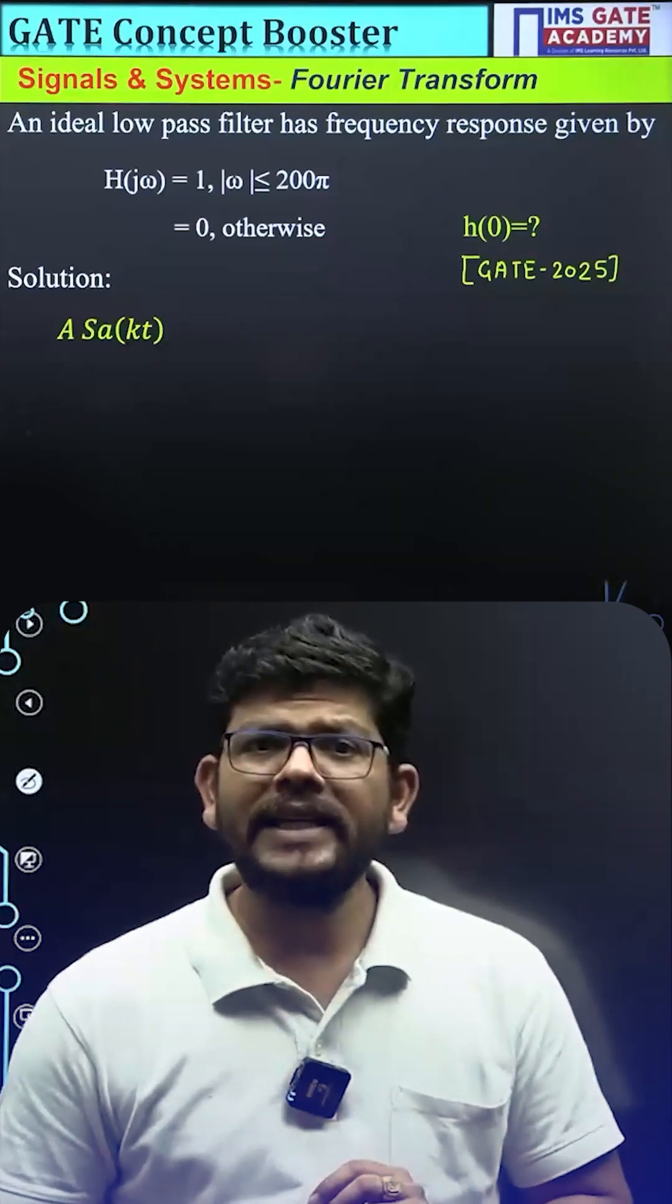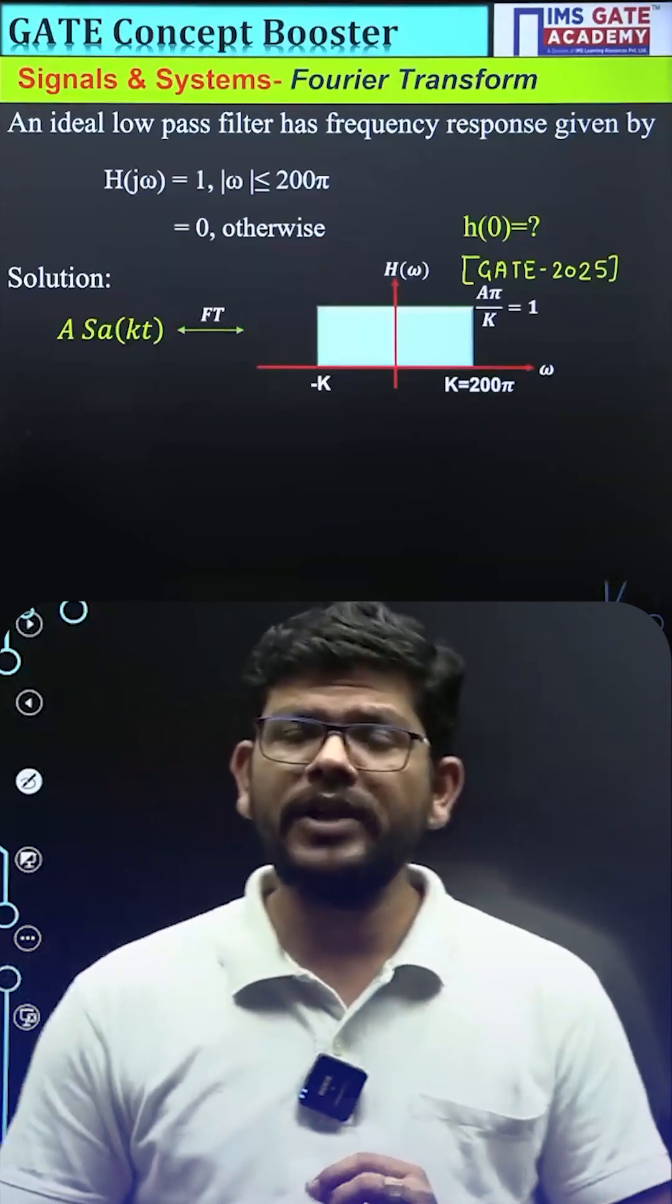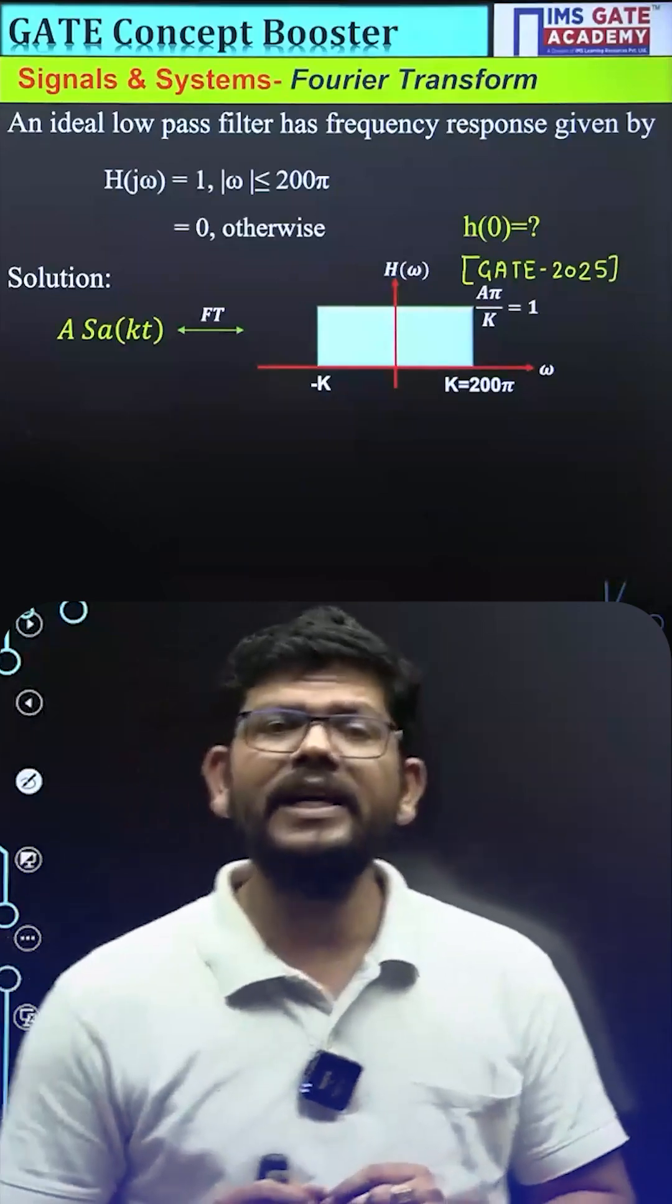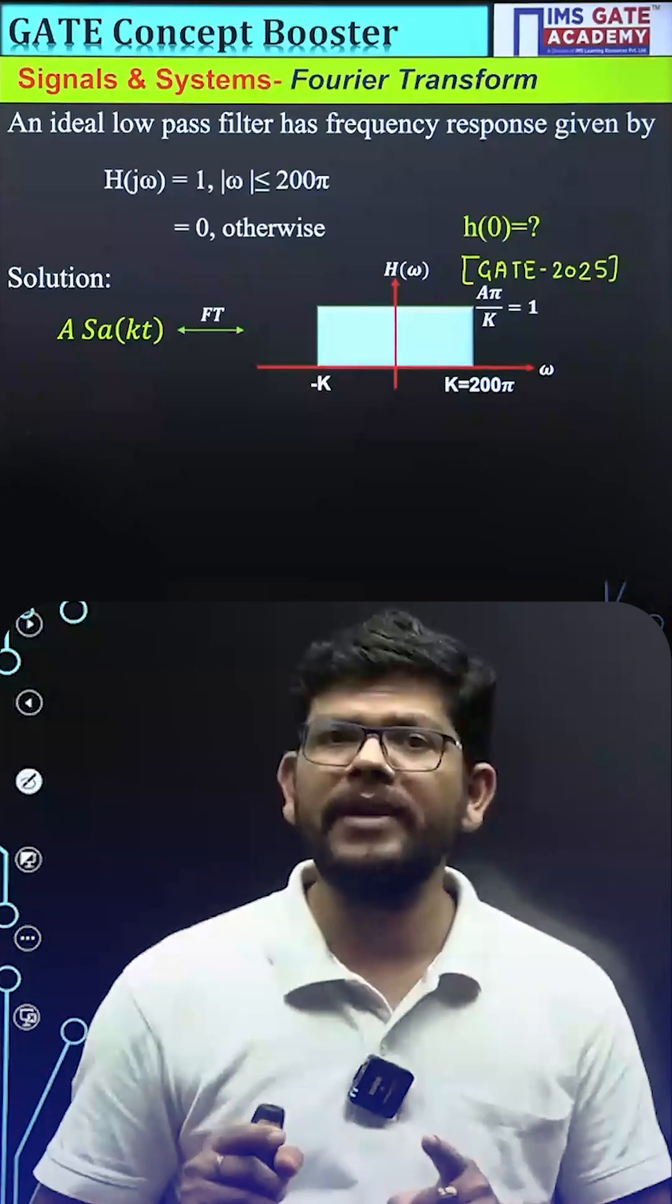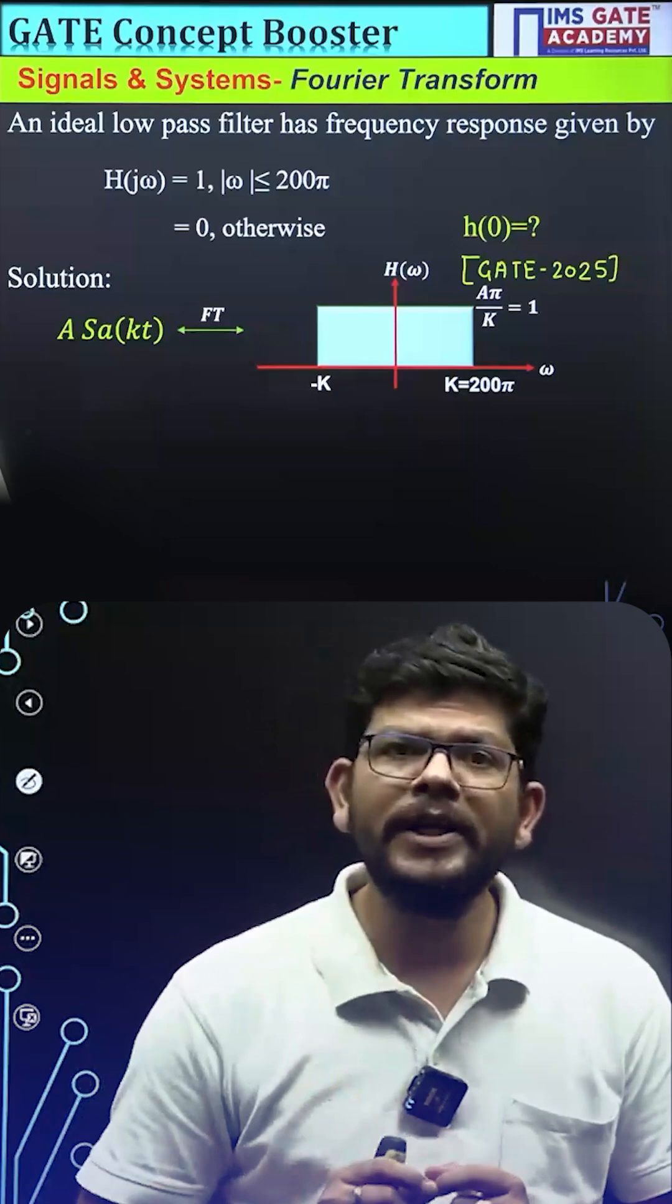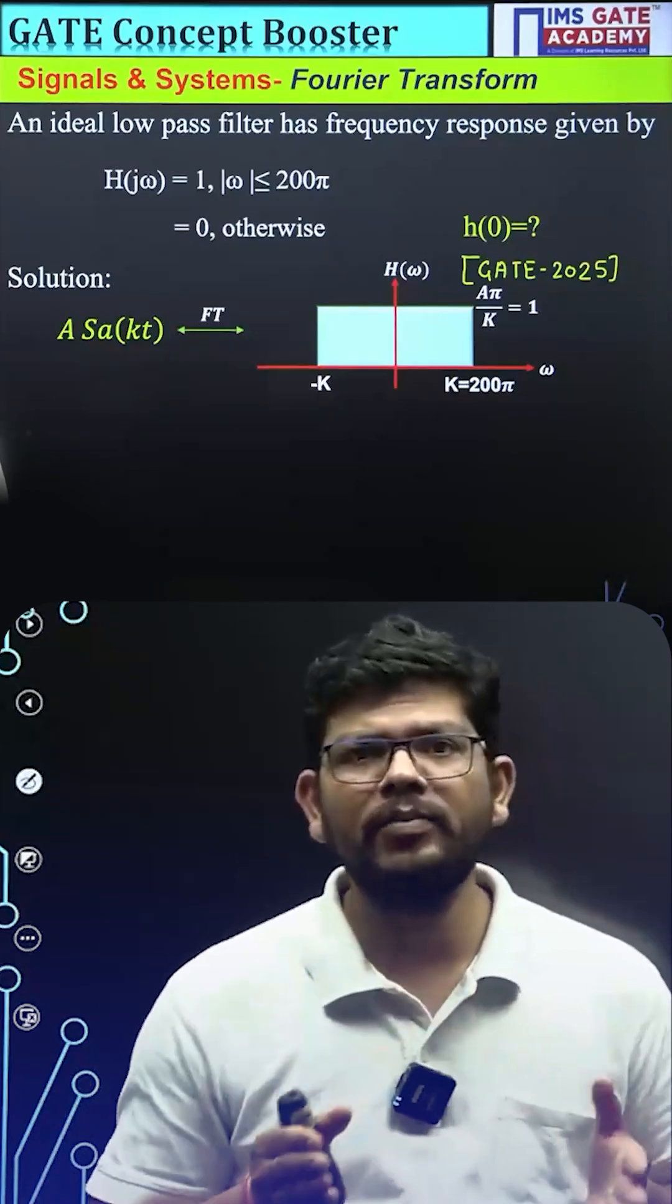if we have a signal A sinc(kt) and if I take the Fourier transform of that signal, it is going to be a rectangular wave in frequency domain with amplitude A π/k and duration from minus k to plus k.